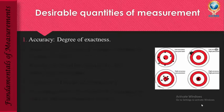Accuracy means the degree of exactness, or it can be defined as the degree of closeness of a measurement compared to the desired value or compared to the expected value. So you have a desired value, and what is the closeness to that desired value — that you call accuracy.